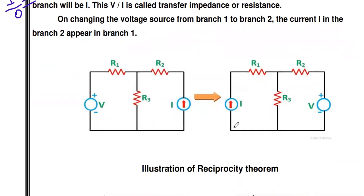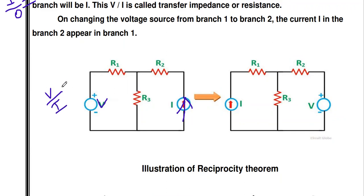For example, consider this diagram. There is a voltage source — this is a single source — and because of this voltage source, current is flowing through this resistor, this resistor, and this resistor. Some current flows in this branch, let's call it i. So the excitation is V and the response is the current i in this branch. The ratio V divided by i is equal to a constant.